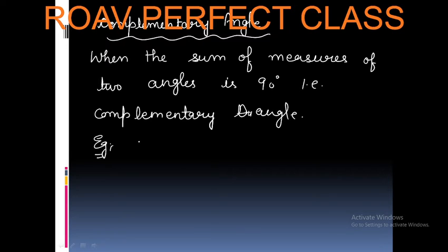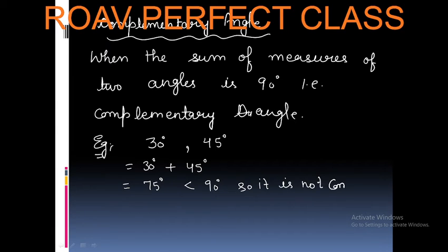Example, if we have two angles, first is 30 degrees and second is 45 degrees. After adding two angles, 30 degrees plus 45 degrees that is 75 degrees. 75 degrees means it is less than 90 degrees, so it is not a complementary angle.